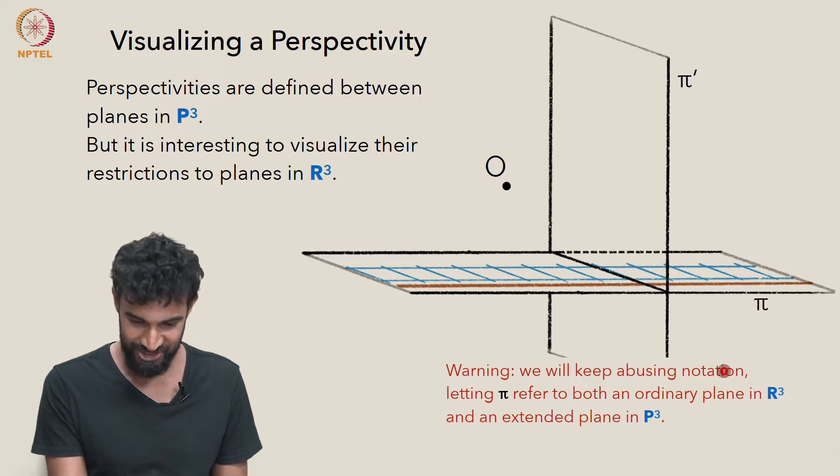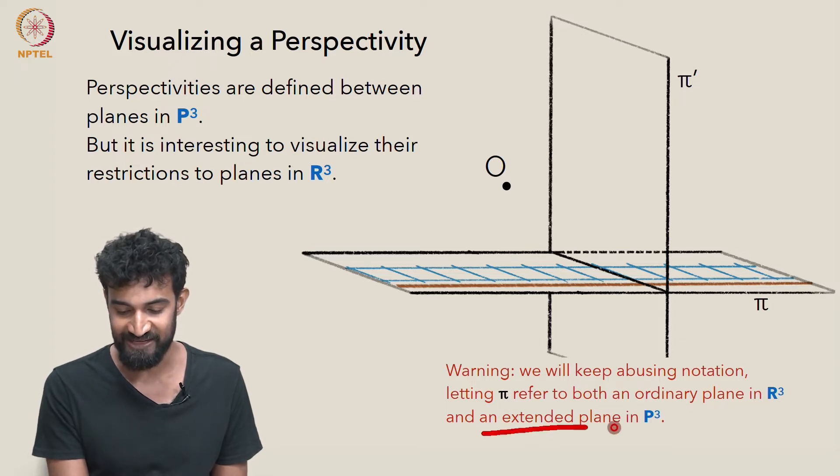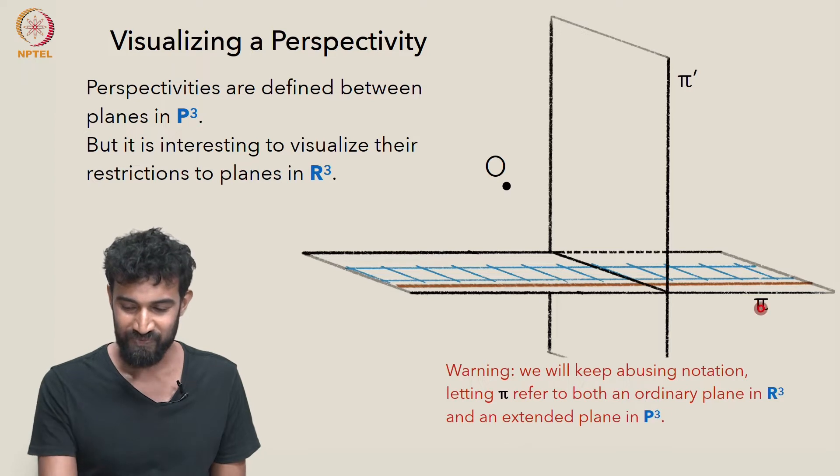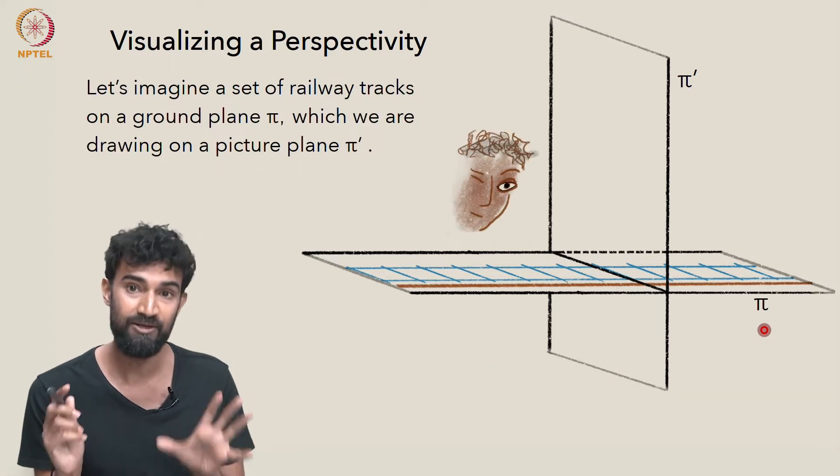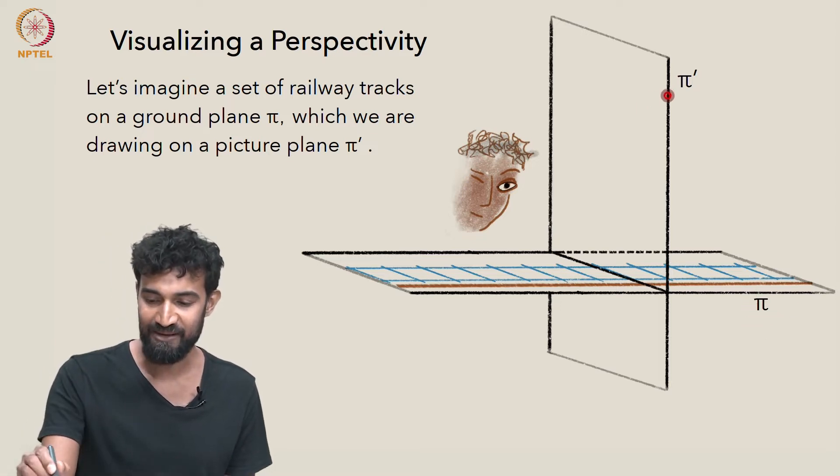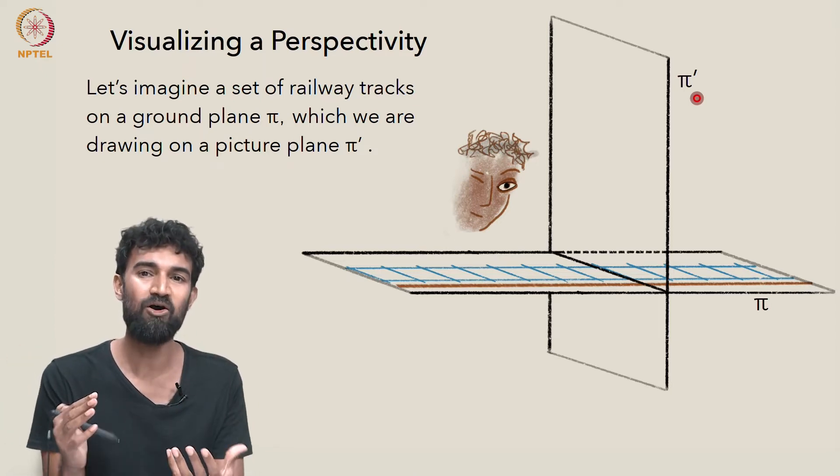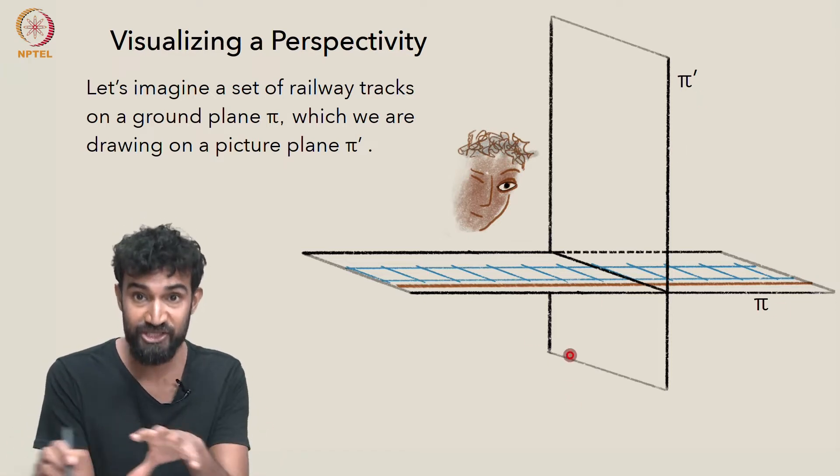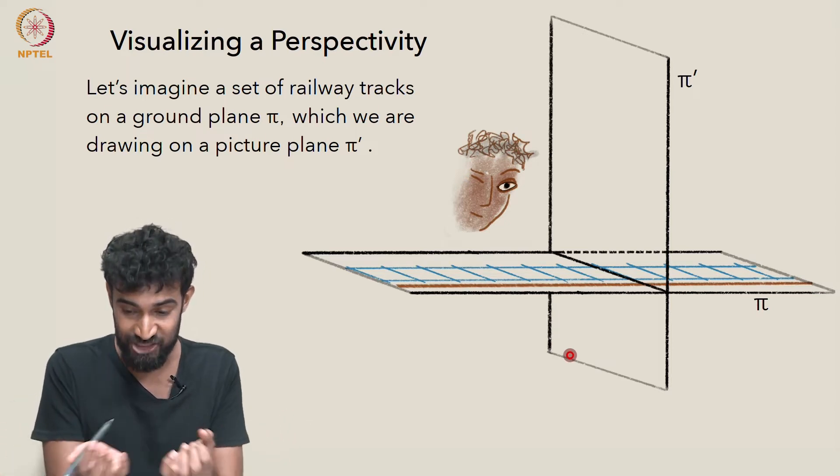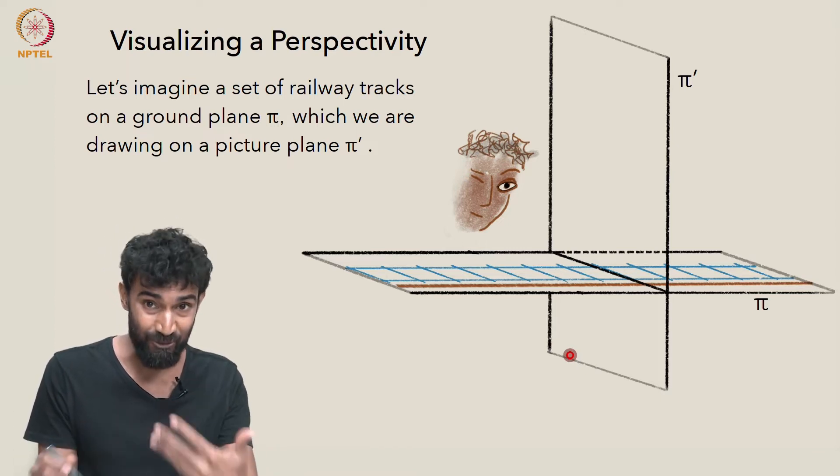Now as a warning, we're going to keep abusing notation and letting the symbol pi refer to both the ordinary plane in R3 and an extended plane in P3, and it'll hopefully be clear from the context. So right now, let's imagine that we're in R3 for the time being. And pi and pi prime, they really are planes in P3, but we're looking at their restrictions to R3. We're ignoring all the points at infinity for the time being that are associated to pi and that are associated to pi prime. Each one has a line at infinity associated to it, but we're going to ignore that for the time being, and we'll bring those in in just a second.